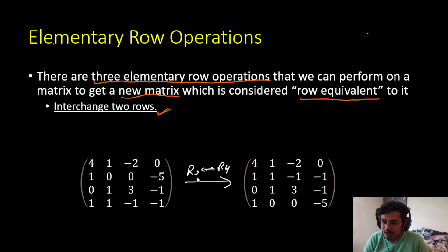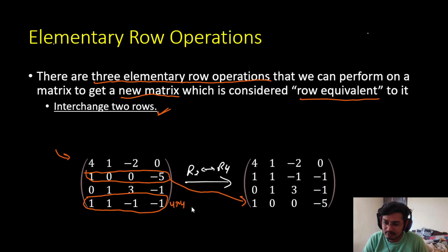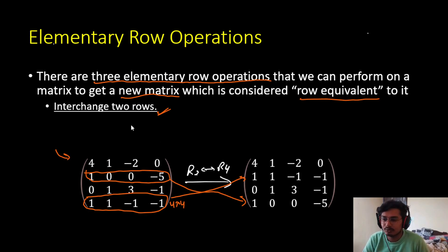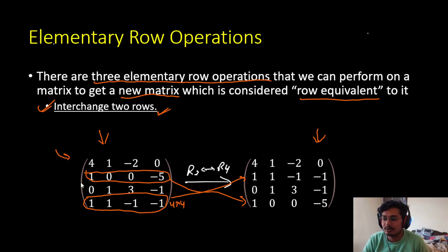Interchanging two rows will have no effect on the original matrix. Here you can see we have this 4×4 matrix, and we have interchanged the second row with the fourth row. This is our second row, and this is our fourth row — we have interchanged these two rows. We can interchange two rows to make things simpler, and this is our first elementary row operation. If you find the determinant of both matrices, they will be the same.